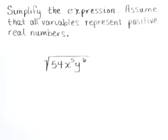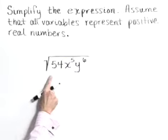Simplify the expression. Assume that all variables represent positive real numbers. This is the square root of 54, x to the fifth, y to the sixth.